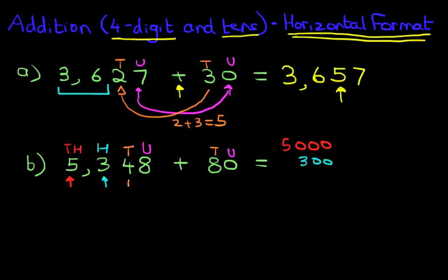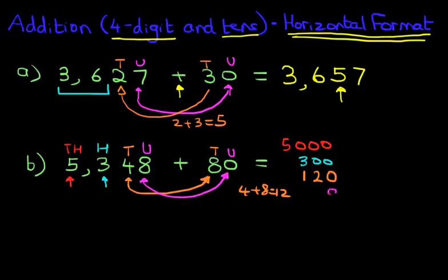Now we're going to add the tens. We've got four here and we've got eight over here. What is four plus eight? Equals 12. So we can write this down. One, two. And don't forget the zero because that is tens. Four plus eight is 12 and the zero because we're adding tens. And lastly, we're going to add the units. We've got eight plus zero. So that remains eight.